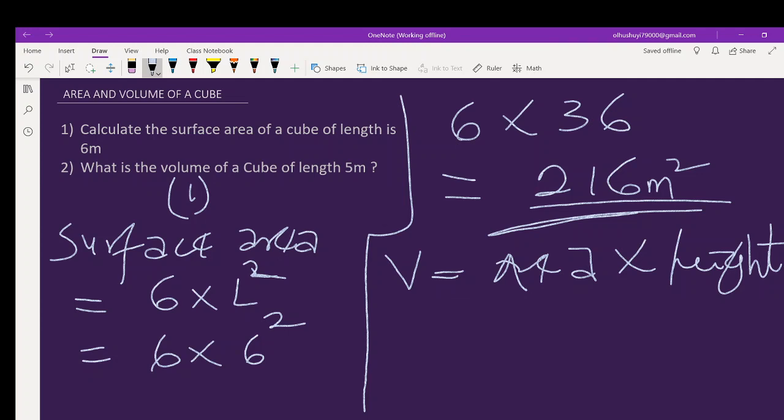So what is the area? The surface area, which is 6L squared, times the height. Of course, the height is the same kind of length in a cube.